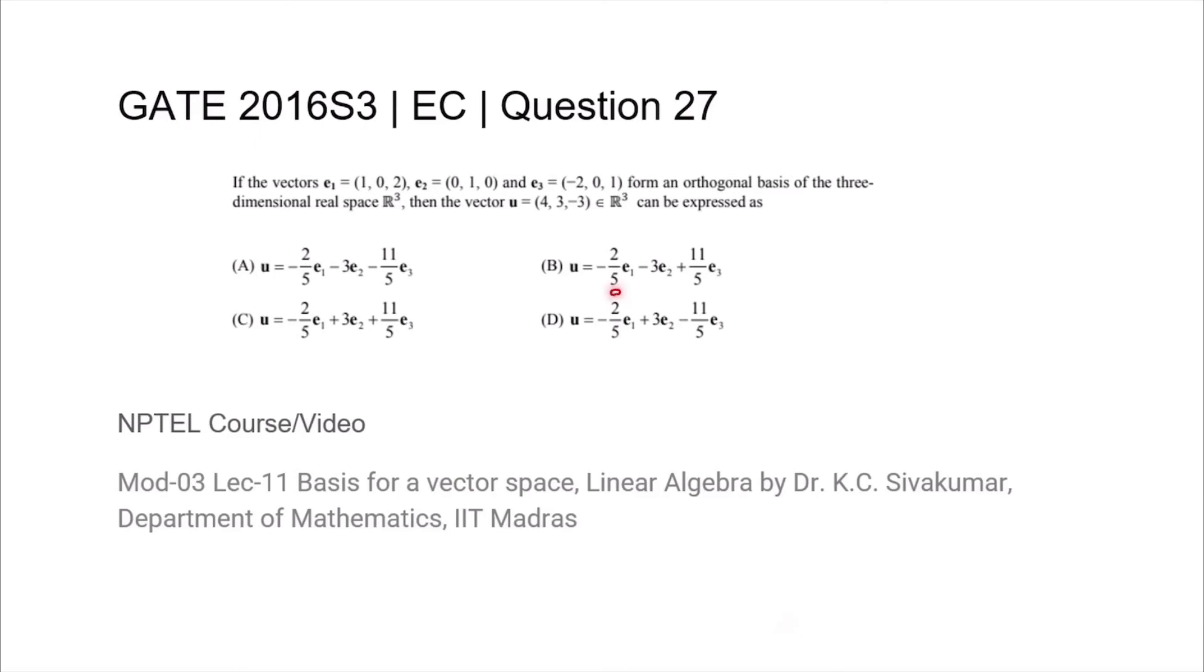So the answer is that c1 is equal to minus 2 by 5, c2 equal to 3, and c3 is minus 11 by 5. That is, the answer is option D.